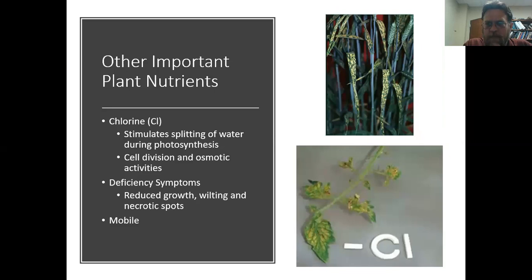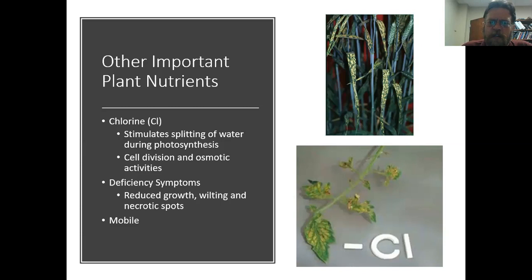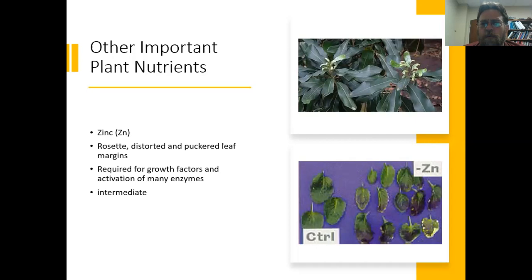Chlorine is not a chemical you generally need a whole lot of — it's one of the lesser nutrients required in very small amounts. But it is very important in splitting water during photosynthesis, and it's involved in cell division and plant growth. When we don't have enough, we tend to get necrotic spots on the plant. I tend to see that on the older leaves before the newer leaves. Not one I've honestly ever run into — it's possible but very infrequent. The form the plant takes up is chloride, not chlorine itself, because chlorine can actually have a toxicity issue.